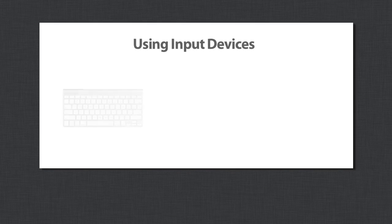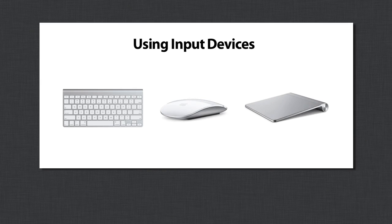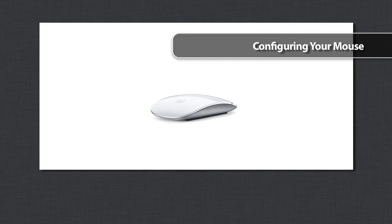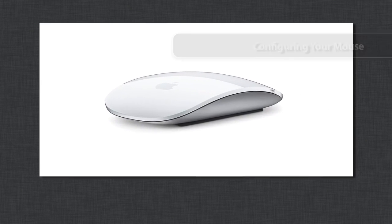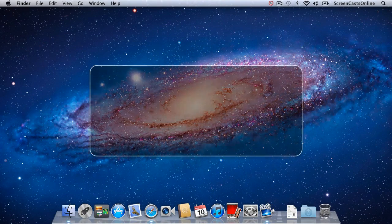Before we start looking at the software, there are a couple of terms we need to clarify, and also a couple of myths we need to dispel. As well as the keyboard, which we'll look at shortly, you'll most likely be using either a mouse or a trackpad. I'm using a MacBook Air with a built-in trackpad for this tutorial. But you might want to add a mouse or an external trackpad to your system if it's a desktop machine. So let's start with the mouse. You can buy a Magic Mouse from Apple, or you can use any USB mouse, and yes, you can use a two-button mouse. To configure a two-button mouse or any mouse, let's jump into looking at the System Preferences panel.